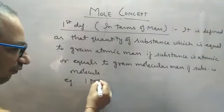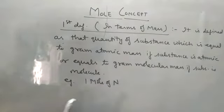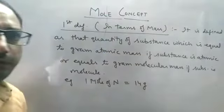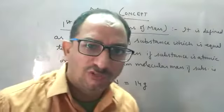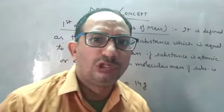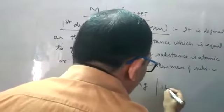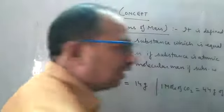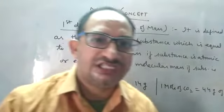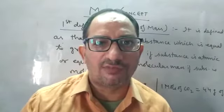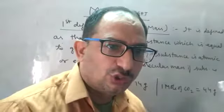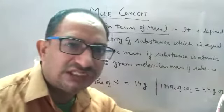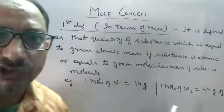For example, one mole of nitrogen — nitrogen is an atom — so one mole of nitrogen equals 14 grams of nitrogen; both represent the same thing. Similarly, one mole of carbon dioxide equals 44 grams of carbon dioxide. So in terms of mass, it equals gram atomic mass for atoms or gram molecular mass for molecules. That is the first definition.